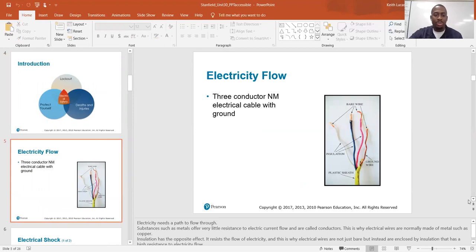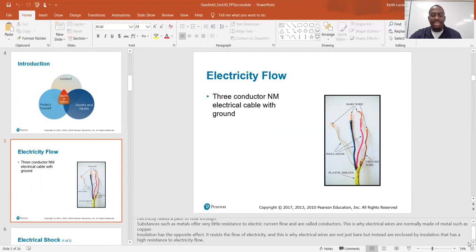Electricity flow. Electricity needs a path to flow. Substances such as metals offer very little resistance to electric current flow and are called conductors. This is why electrical wires are normally made of metal, such as copper. Insulation has the opposite effect. It resists the flow of electricity, and this is why electrical wires are not just bare, but instead are enclosed by insulation that has a high resistance to electricity flow.